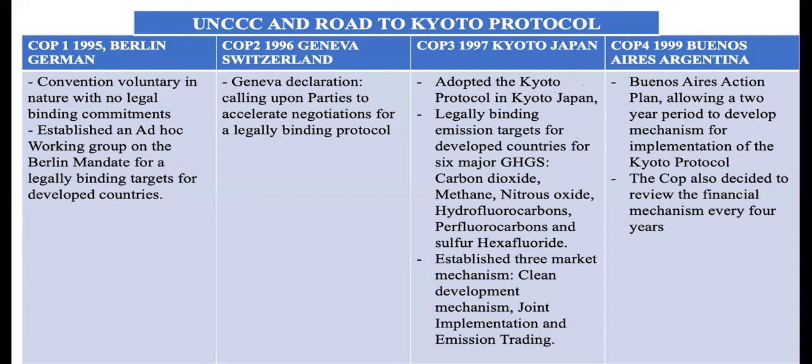So we went on to the next conference — COP4 in 1998 in Buenos Aires, Argentina. In Buenos Aires, the conference came up with the Buenos Aires Action Plan, which allowed a three-year period to develop the mechanisms for implementation of the Kyoto Protocol. The COP also decided to review the financial mechanisms every four years.